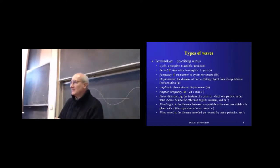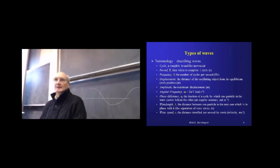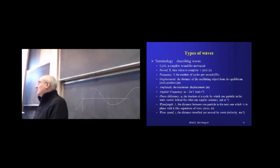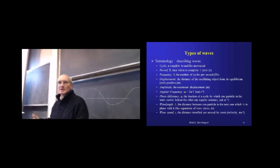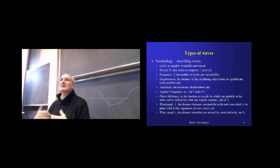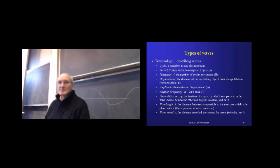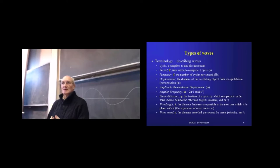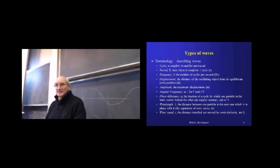Here's a page of definitions — pretty much the only page of definitions you're going to get. A cycle is a complete to and fro motion: one complete oscillation. The period is the time it takes to complete that one cycle, measured in seconds. Frequency is the number of cycles undertaken in a unit of time — in a second. So if T is the period for one cycle, then frequency is just 1 over T. That's our first equation: f equals 1 over T.